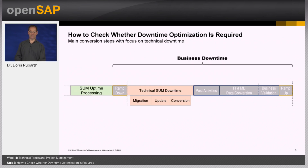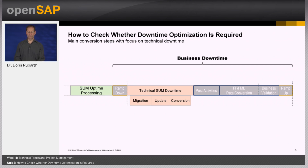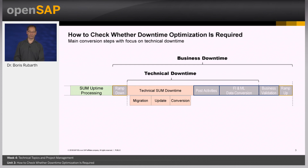Looking at the overall process of the technical conversion, you see blocks in green — these are uptime processing. We have a ramp down, a technical SUM downtime with specific parts, and post activities including FI and ML data conversion. The overall business downtime is influenced not only by the SUM itself, but also by things like business validation or regression tests. We always have to distinguish between business downtime and technical downtime influenced by the Software Update Manager.